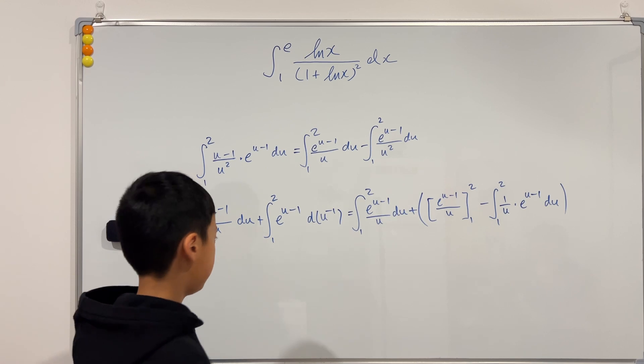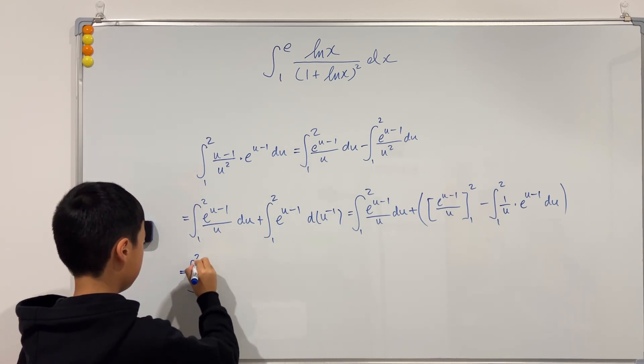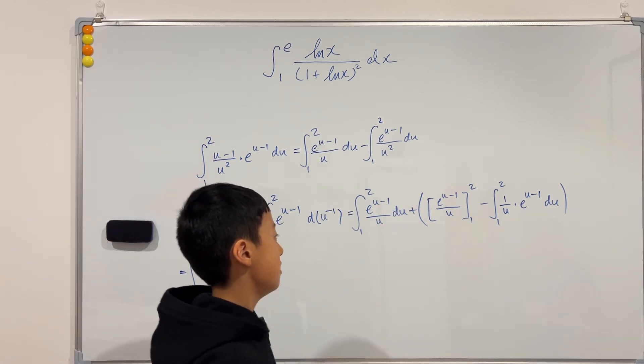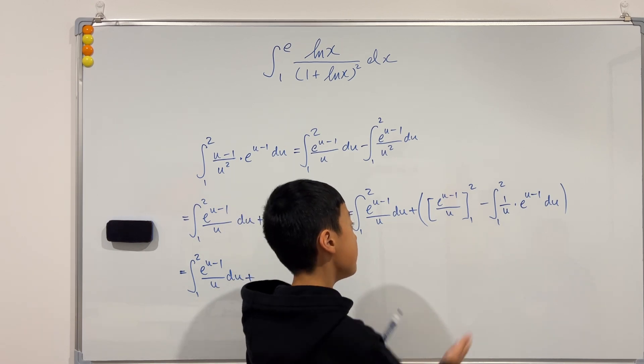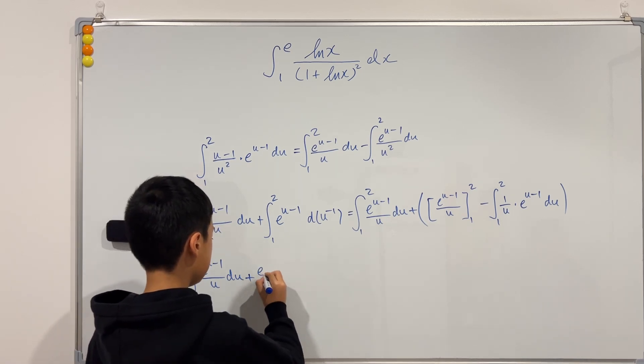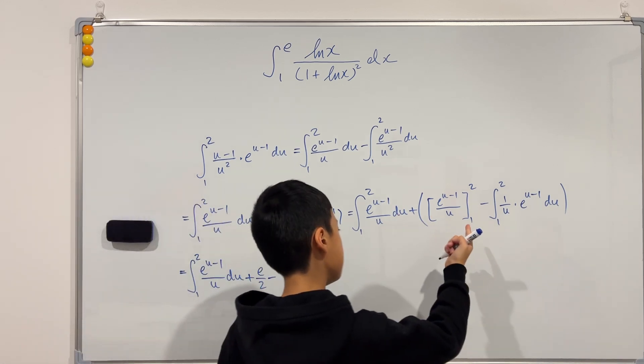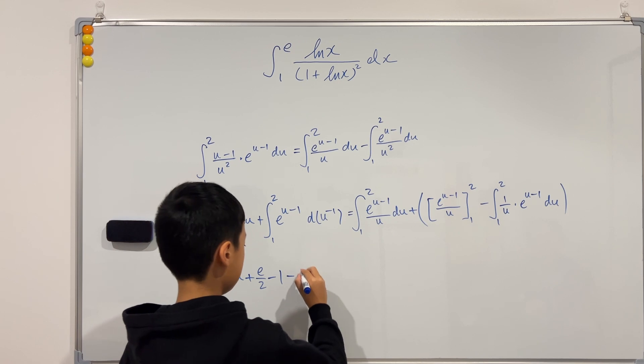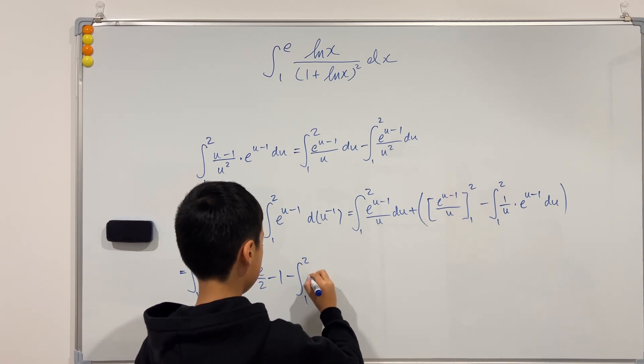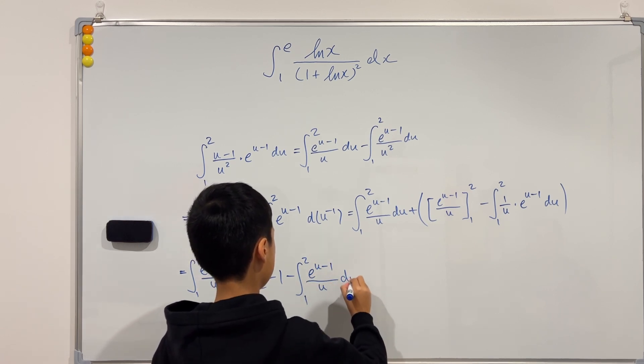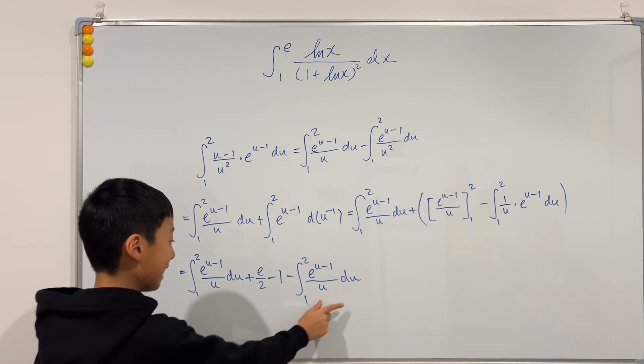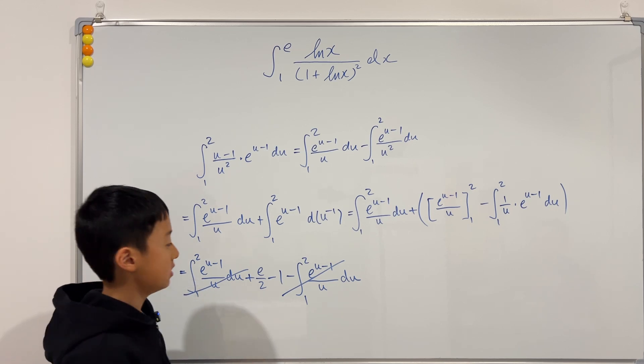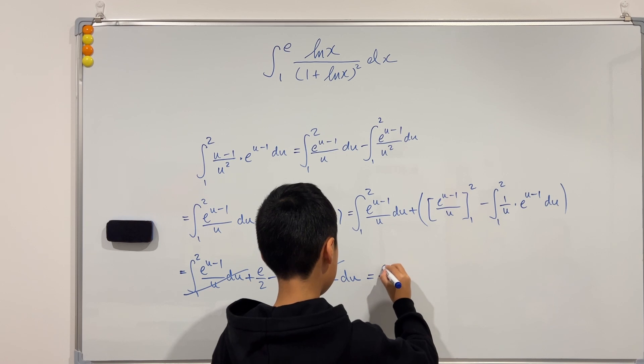So now if we unpack everything then we see this equal to integral from 1 to 2 of e to the u minus 1 over u du, and then we add it with if we evaluate this from 2 to 1 then you see that if we plug in 2 then it becomes e over 2, and then you subtract when you plug in 1, it's just simply 1. And now this plus and that minus still becomes a minus, so minus integral from 1 to 2 e to the u minus 1 over u du. And now if you guys see, this and that actually cancel out. So we have actually figured out this, super fascinating, right? So the final answer is just e over 2 minus 1.